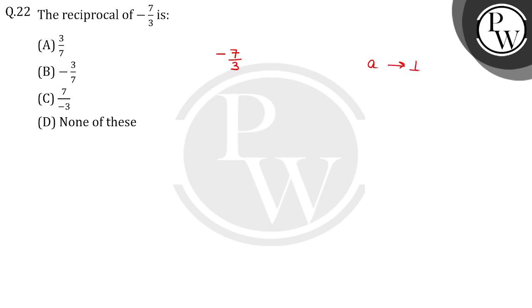A ka reciprocal hota hai 1 by A. So same case mein, minus 7 by 3 ka reciprocal kya ho jayega? Minus 3 by 7. It means option B is the correct answer.